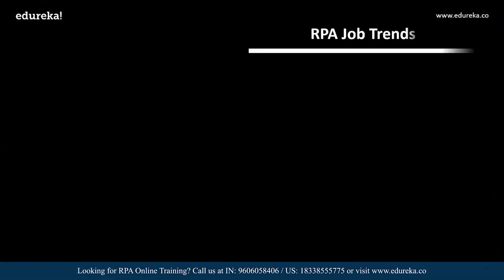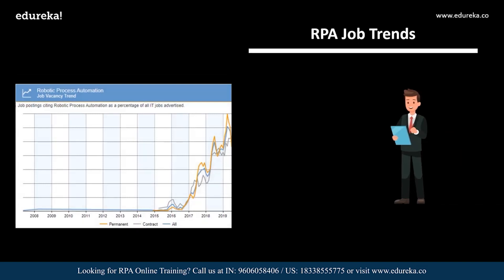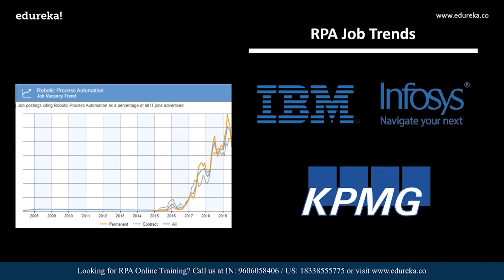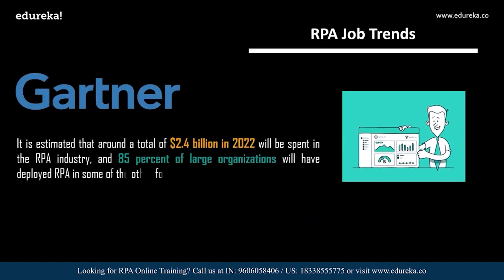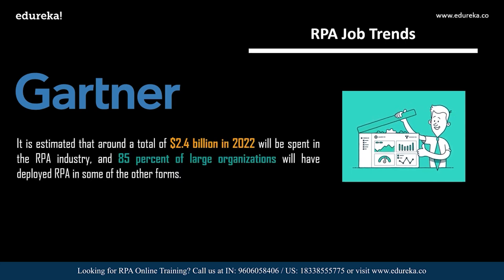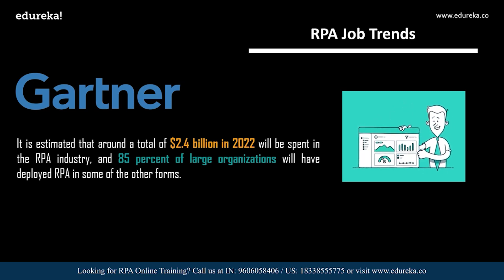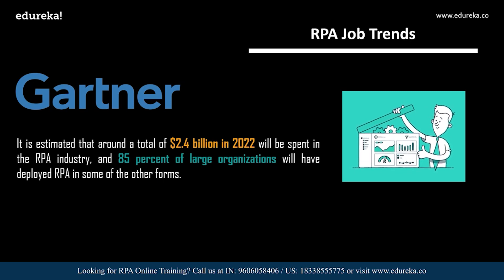The number of RPA developer jobs in the United Kingdom is increasing on a large scale. RPA developer career opportunities will only shoot through the roof, with both startups and well-established companies such as IBM, Infosys, and KPMG offering lucrative salaries. According to Gartner, around 2.4 billion US dollars is estimated to be spent in the field of RPA by 2022, and 85% of large organizations will have deployed RPA in some form.